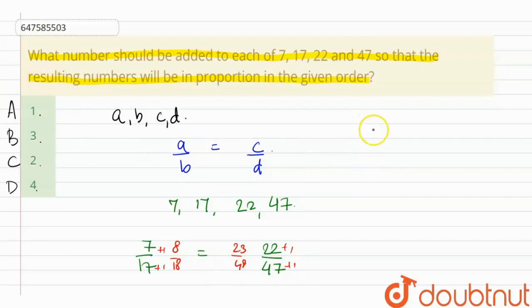Next, we will add 3. Adding 3 gives us 7 plus 3 upon 17 plus 3, and 22 plus 3 upon 47 plus 3. This gives us 10 by 20 and 25 by 50.